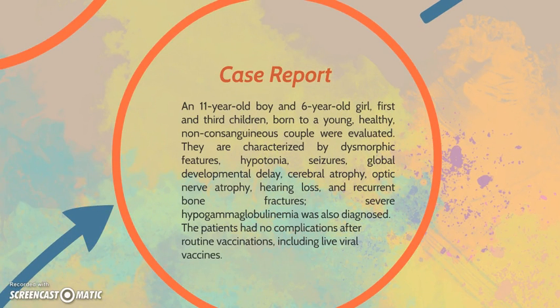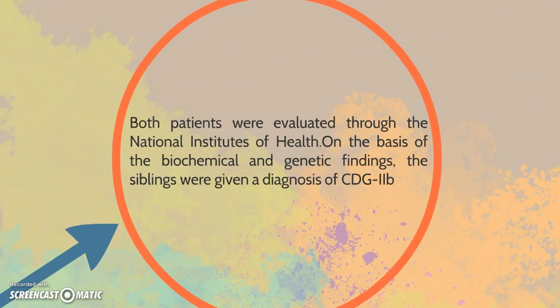Case report: An 11-year-old and a 6-year-old girl — the first and third children of a young, healthy, non-consanguineous couple — were evaluated. They are characterized by dysmorphic features, hypotonia, global developmental delay, cerebral atrophy, optic nerve atrophy, hearing loss, and recurrent bone fractures. Severe hypogammaglobulinemia was also diagnosed. The patients had no complications after routine vaccinations, including live viral vaccines. Both siblings were evaluated through the National Institutes of Health based on biochemical and genetic findings, and were given a diagnosis of CDG2B.